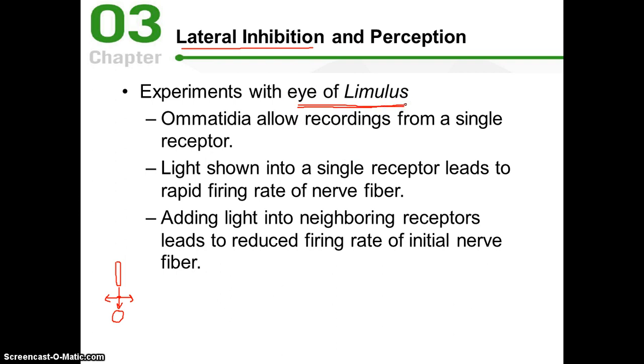The eye of the limulus is made up of lots of ommatidia, which are basically the horseshoe crab's version of rods and cones, but they're big enough that it's easy for researchers to record from a single receptor. It's easy enough for them to get an electrode into exactly one of these, and they found some interesting things.